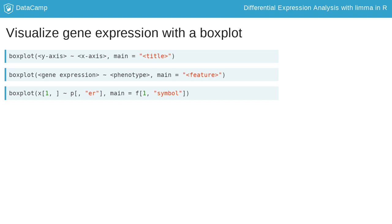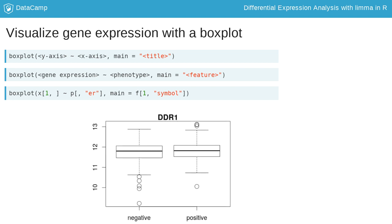Specifically, to plot the first gene of the breast cancer data, I subset the first row of the expression matrix for the y-axis, and I select the column ER from the phenotype data frame for the x-axis. For the title, I use the feature data column symbol, remembering to subset to only include the first row, corresponding to the first gene. This gene appears to be similar in both groups.